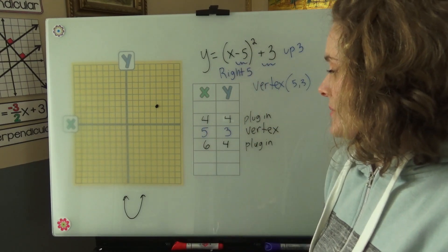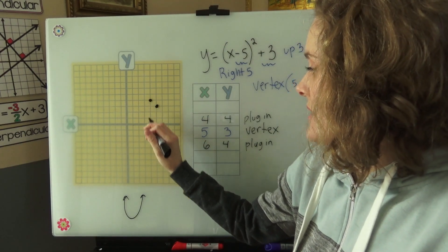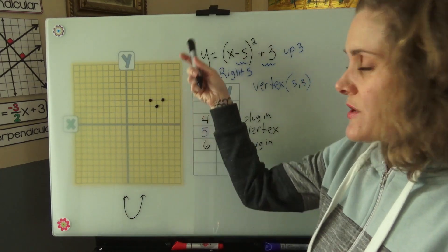So now we have two more points to plot. 4, 4. And 6, 4. And we can see our parabola is starting to shape up.